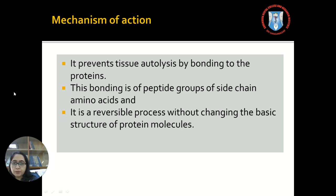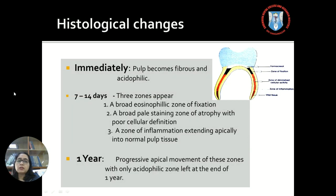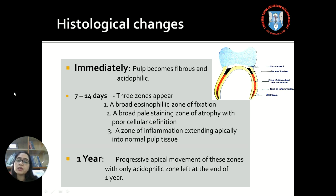The mechanism of action of formocresol: it prevents tissue autolysis by bonding to proteins. This bonding is of peptide groups of side-chain amino acids and is a reversible process without changing the basic structure of the protein molecules of the pulp. This figure shows the histological changes after formocresol pulpotomy. Immediately on application, the pulp becomes fibrous and acidophilic. After 7 to 14 days, three zones can be seen: a broad eosinophilic zone of fixation, a broad pale-staining zone of atrophy with poor cellular definition, and a zone of inflammation extending apically into normal tissues. After 1 year, there is progressive apical movement of these zones until only the acidophilic zone remains.